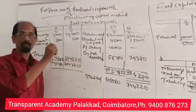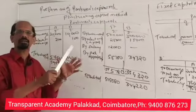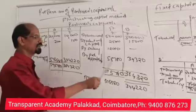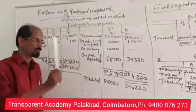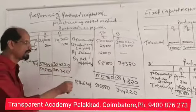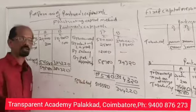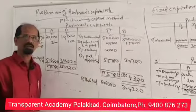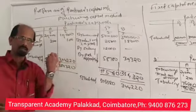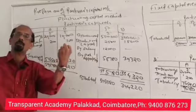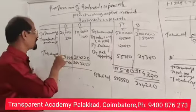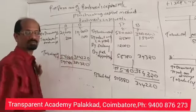Then we prepare the P&L Appropriation Account. On the debit side, we divide the answer. On the credit side, the P&L Appropriation Account shows 58,780 and 39,320. We discuss the debit side, then transfer to A's capital and B's capital, dividing the profit. On the debit side, partner capital withdrawals: drawings of 20,000 and 10,000, and interest on drawings of 200 and 100.